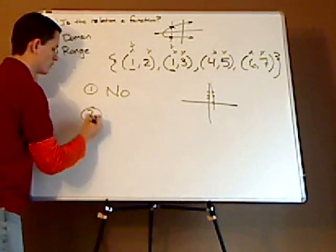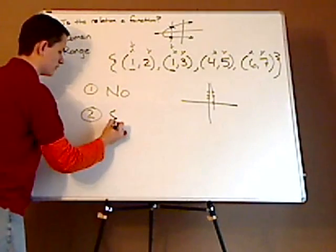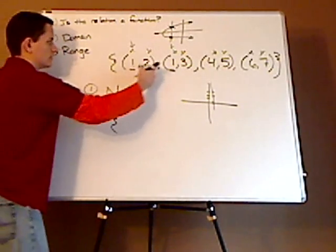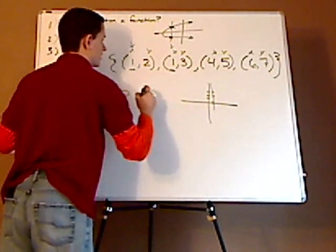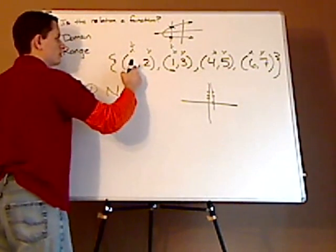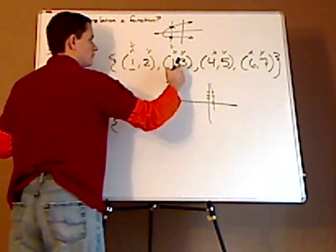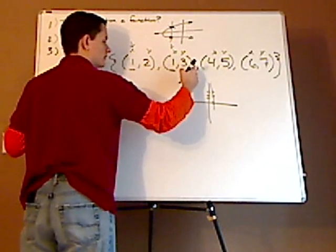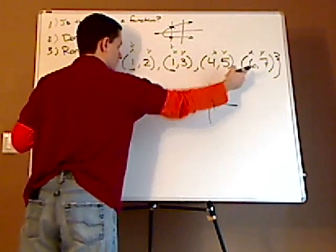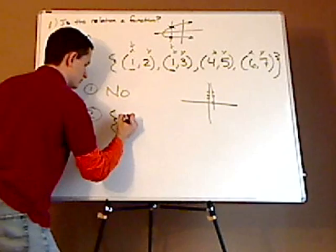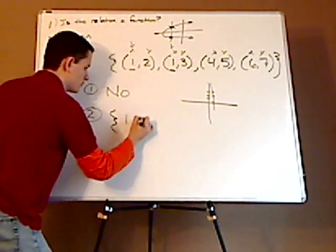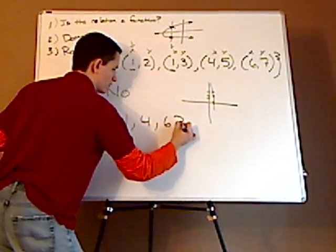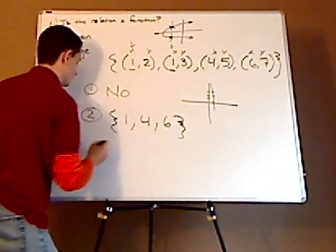Second, what's its domain? The domain is all the X values — all possible X values. So it would be one — I only have to list that once — four and six. So the domain is one, four, and six.